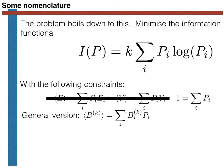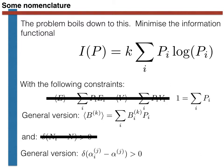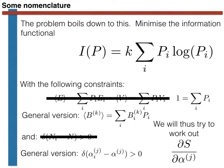In order to keep things general, just as we changed the names of the extensive thermodynamic variables whose averages we constrained using Lagrange multipliers, we will also change the symbol for those quantities we are keeping fixed. Hence, instead of writing a constraint on a delta function evaluated based on the number of atoms, we write a general version using the symbol alpha superscript j to indicate some quantity kept fixed using a delta function. Alpha superscript j underscore i is the value of that quantity in microstate i. Our aim will thus be to work out an expression for the partial derivative of the entropy with respect to alpha superscript j.